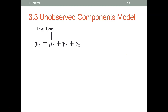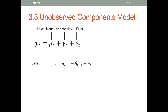Let's talk about the unobserved components model. The unobserved components model has a level and a trend combined — designated by mu — plus a seasonality component and an error term. How does level and trend work? At time t, you start with the previous level plus trend, which brings you to the next level. However, there could also be some random fluctuation added to the level.